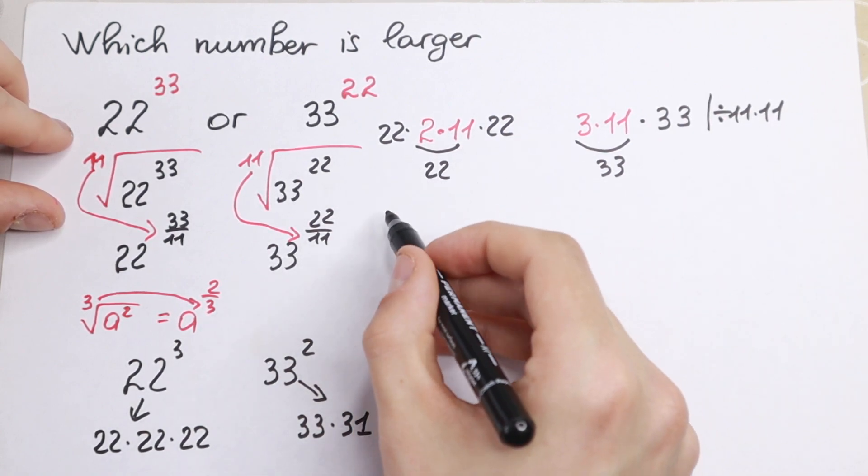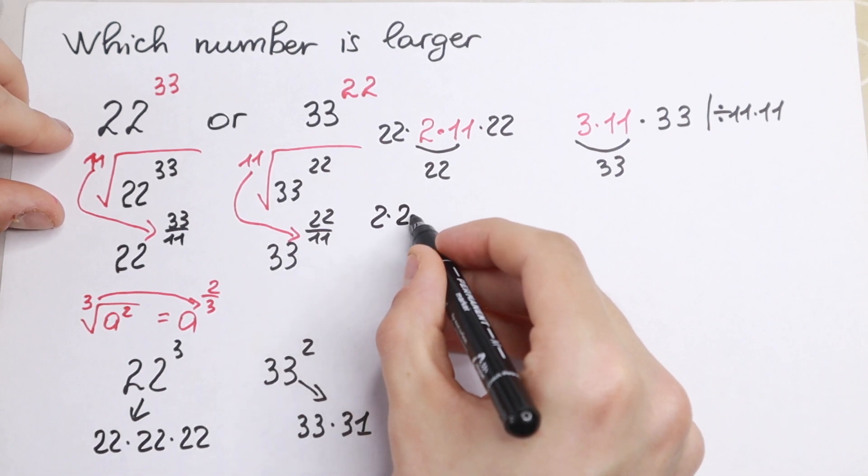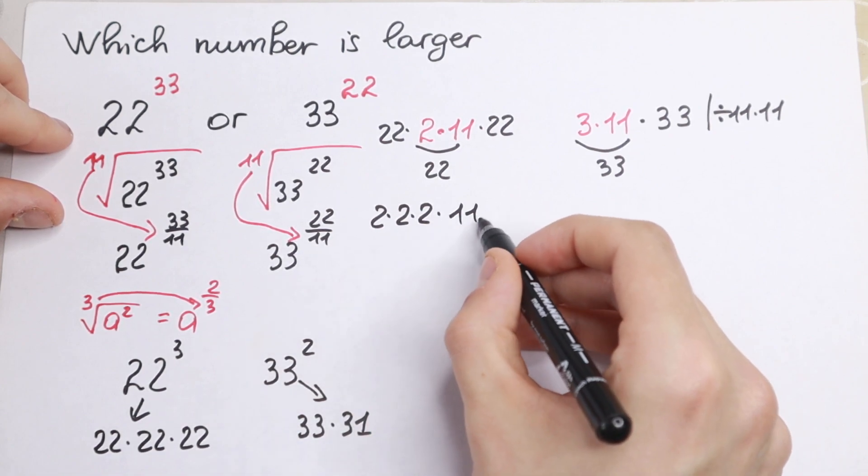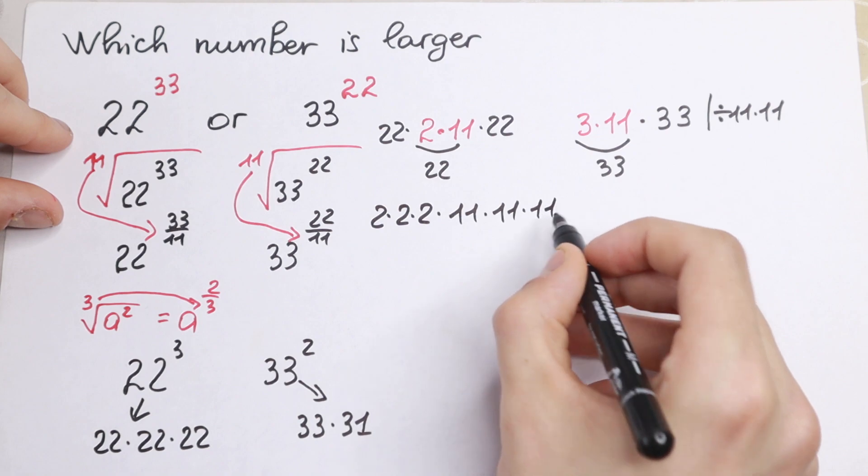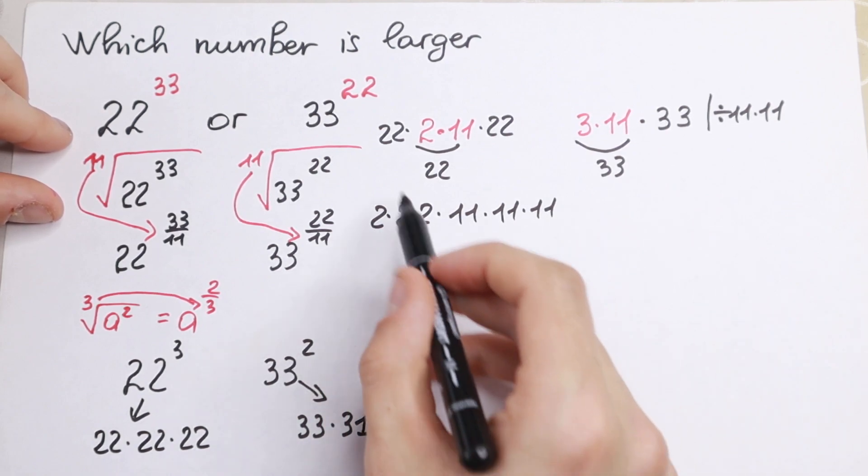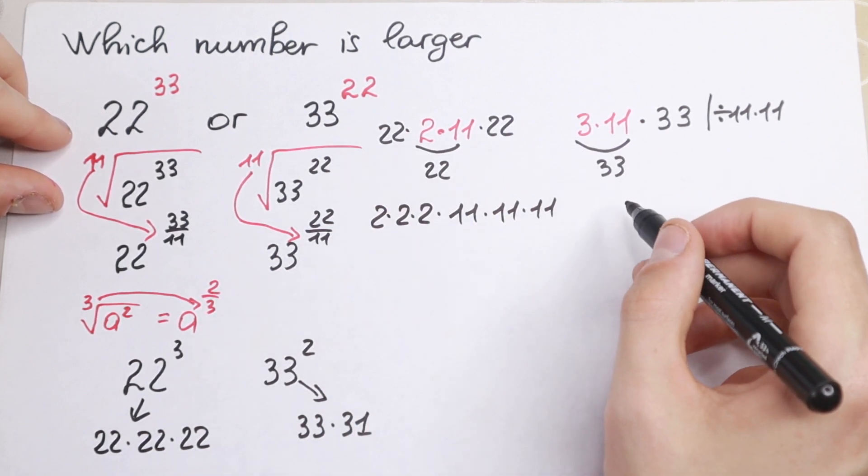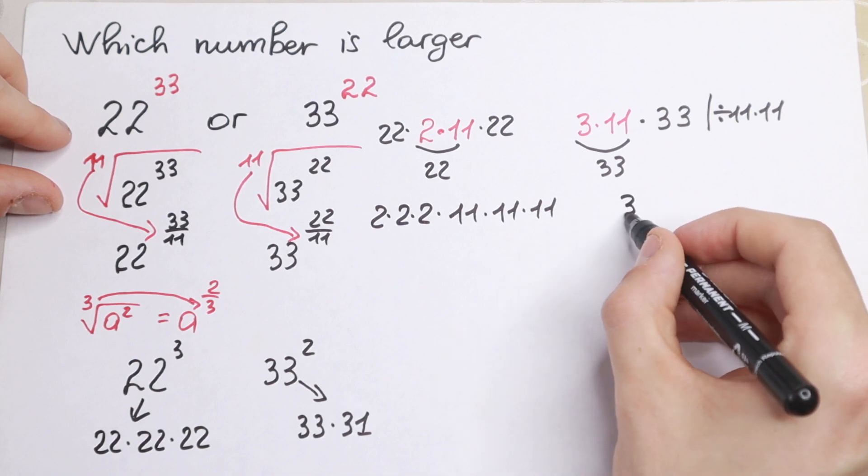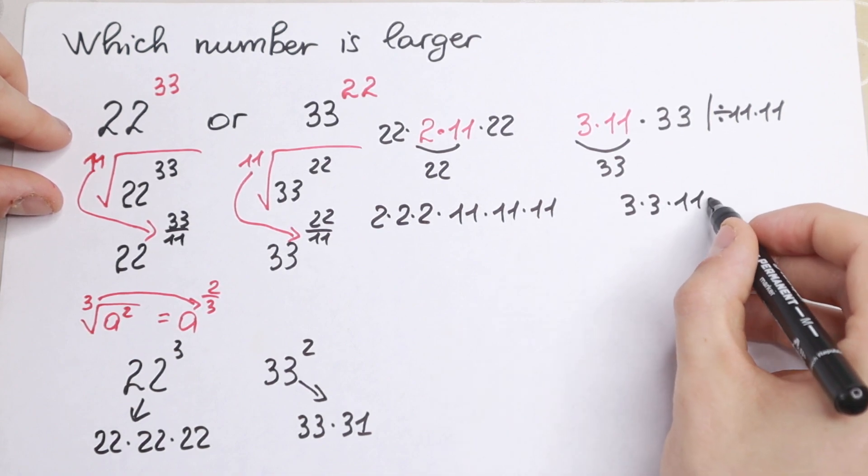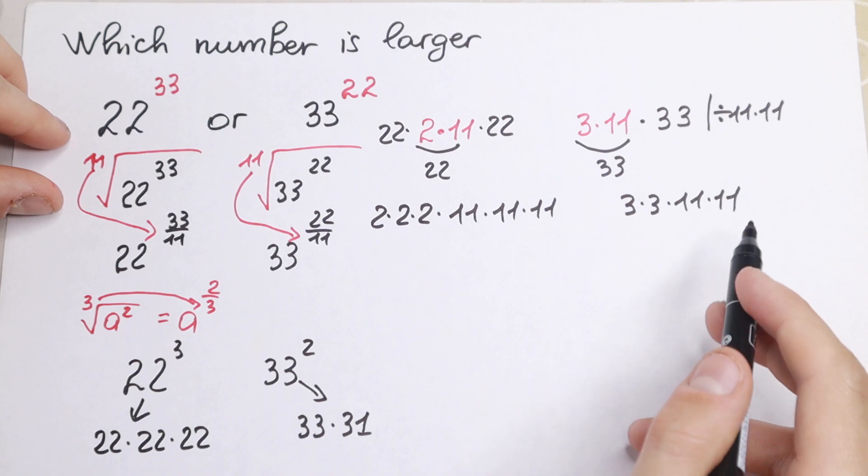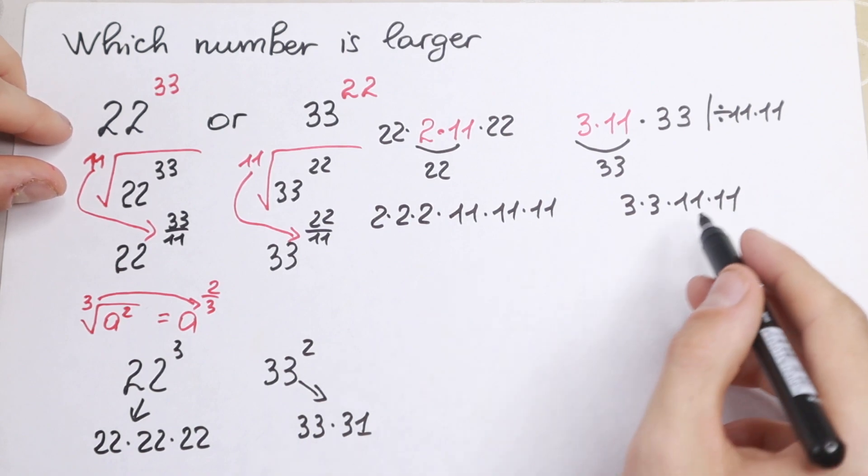So right here we will have 2 times 2 times 2 and times 11 times 11 times 11. All of these parts will be equal to 22. And right here we will have 3 times 3 times 11 times 11.